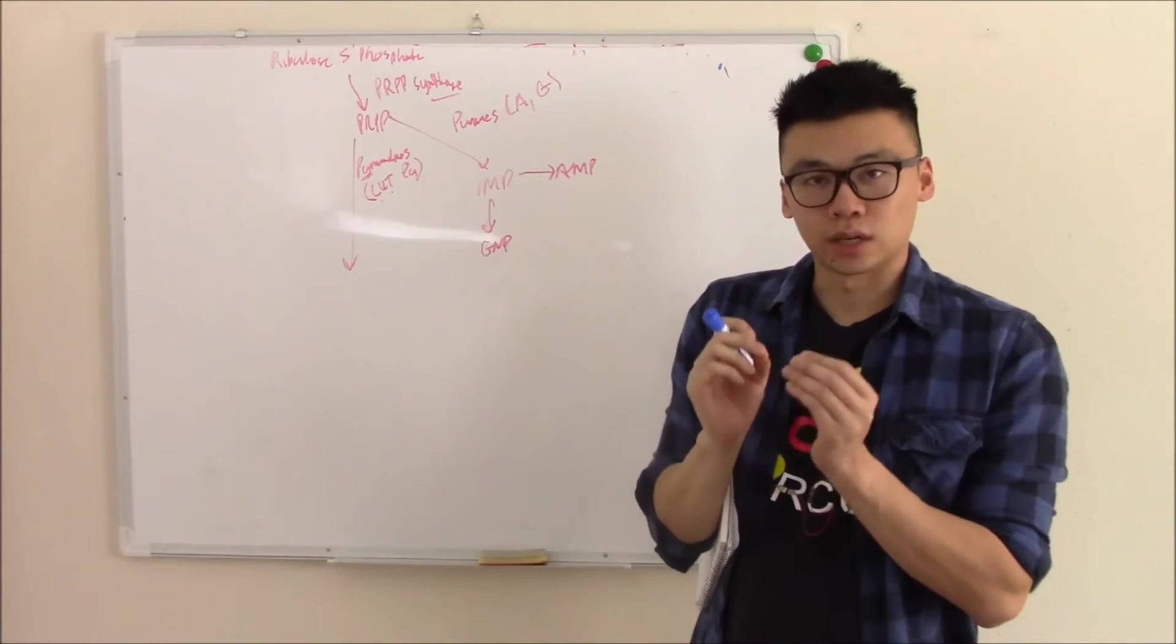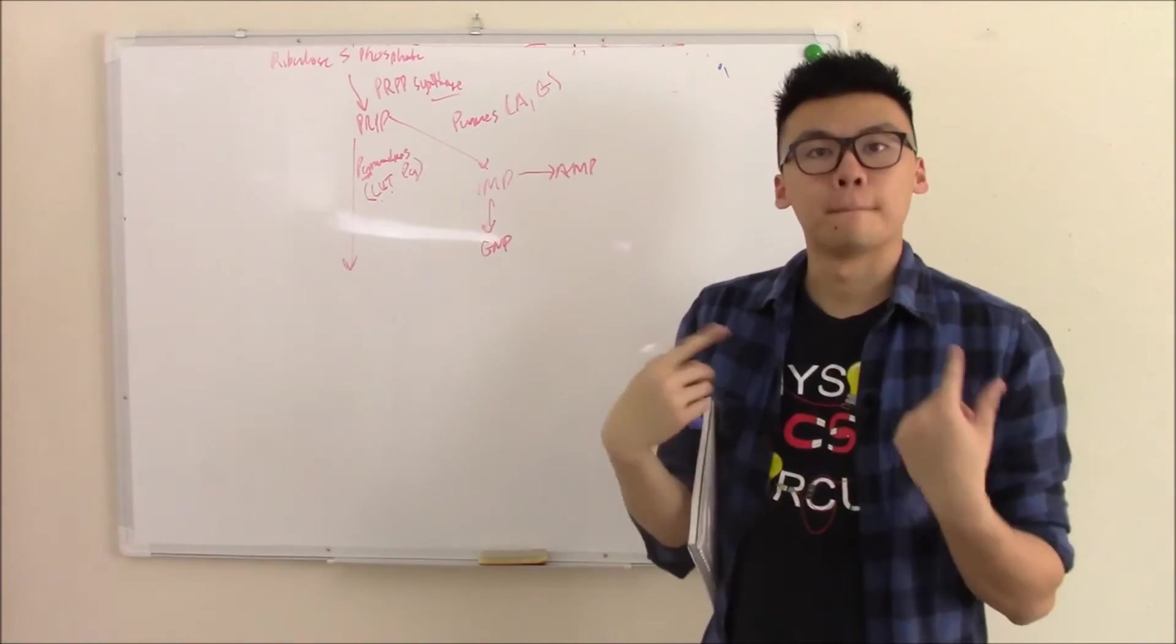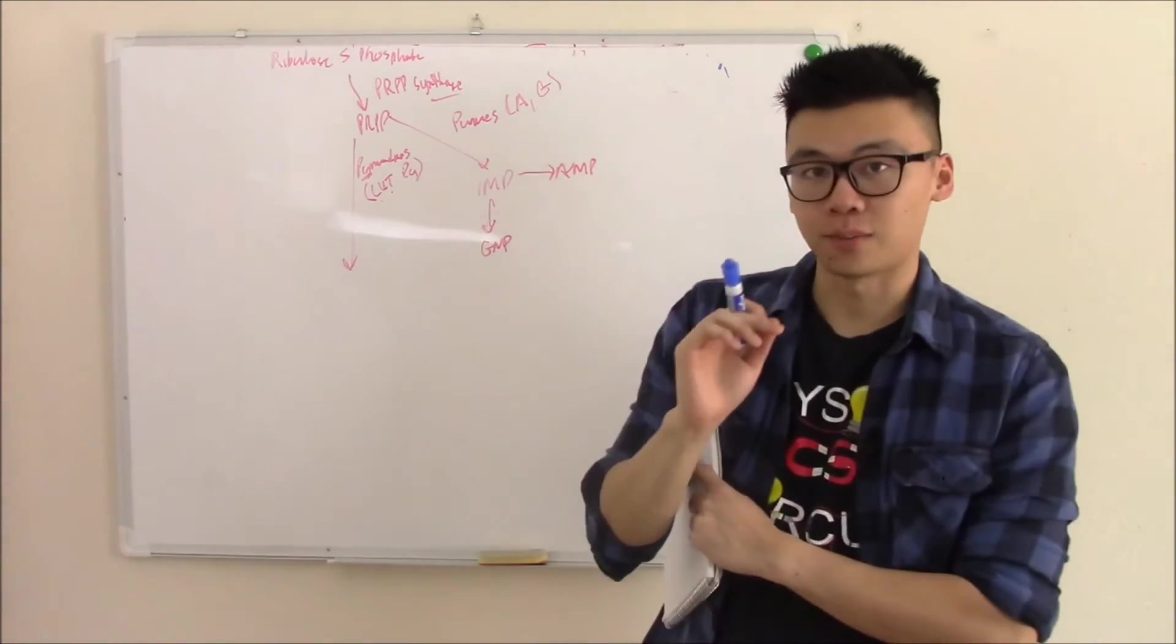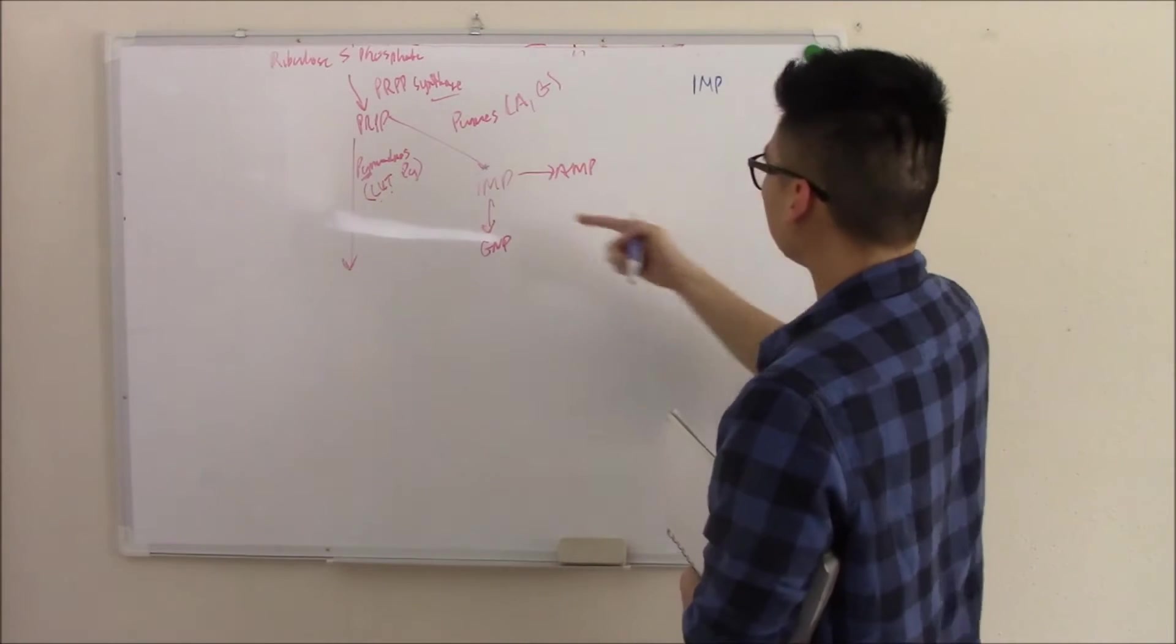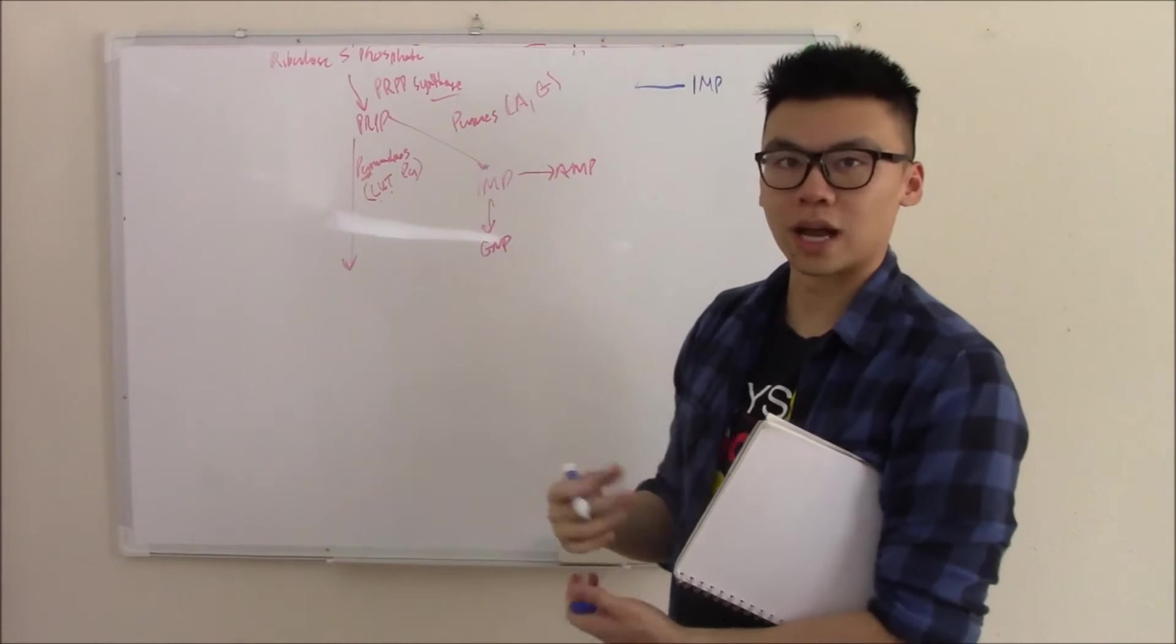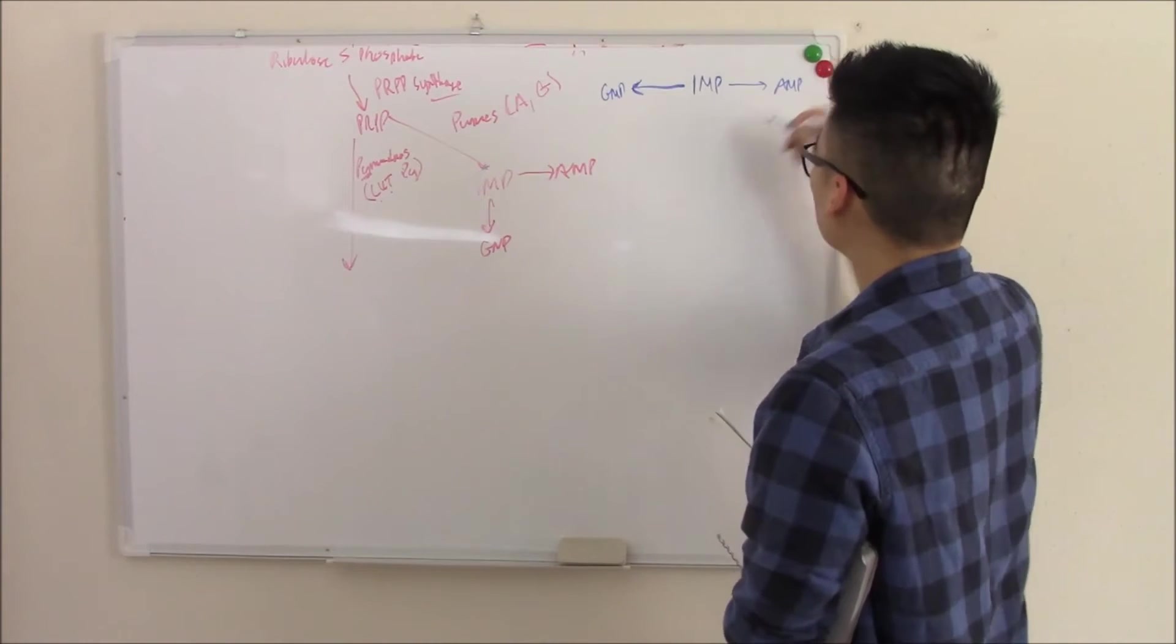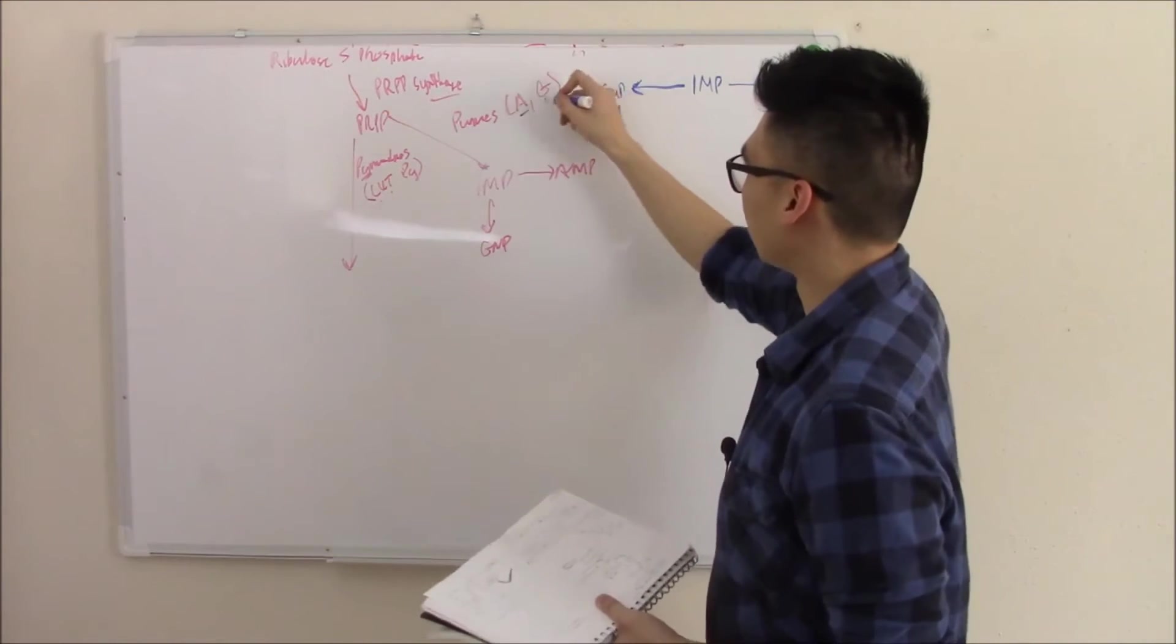However, that's the minority. Most of the times we get it in our diet or through waste and we recycle it back. That's called the purines salvage pathway. Again, that's where we get the majority of our purines. So let's spend some time talking about that. So we're going to start with our IMP, just like here. However, it's from dietary sources. We're not making it from scratch. But it does the same thing. It turns into GMP and AMP.